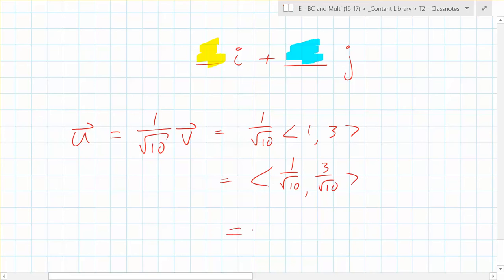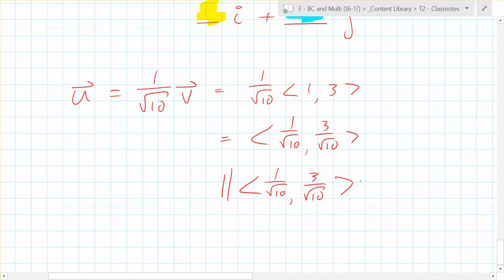What's the magnitude of that? When you put double bars for notation to find the magnitude, what do you do to each component? How do you find the magnitude of a vector? You square each component and square root it. So it's gonna be (1 over root 10) squared plus (3 over root 10) squared. What is that?